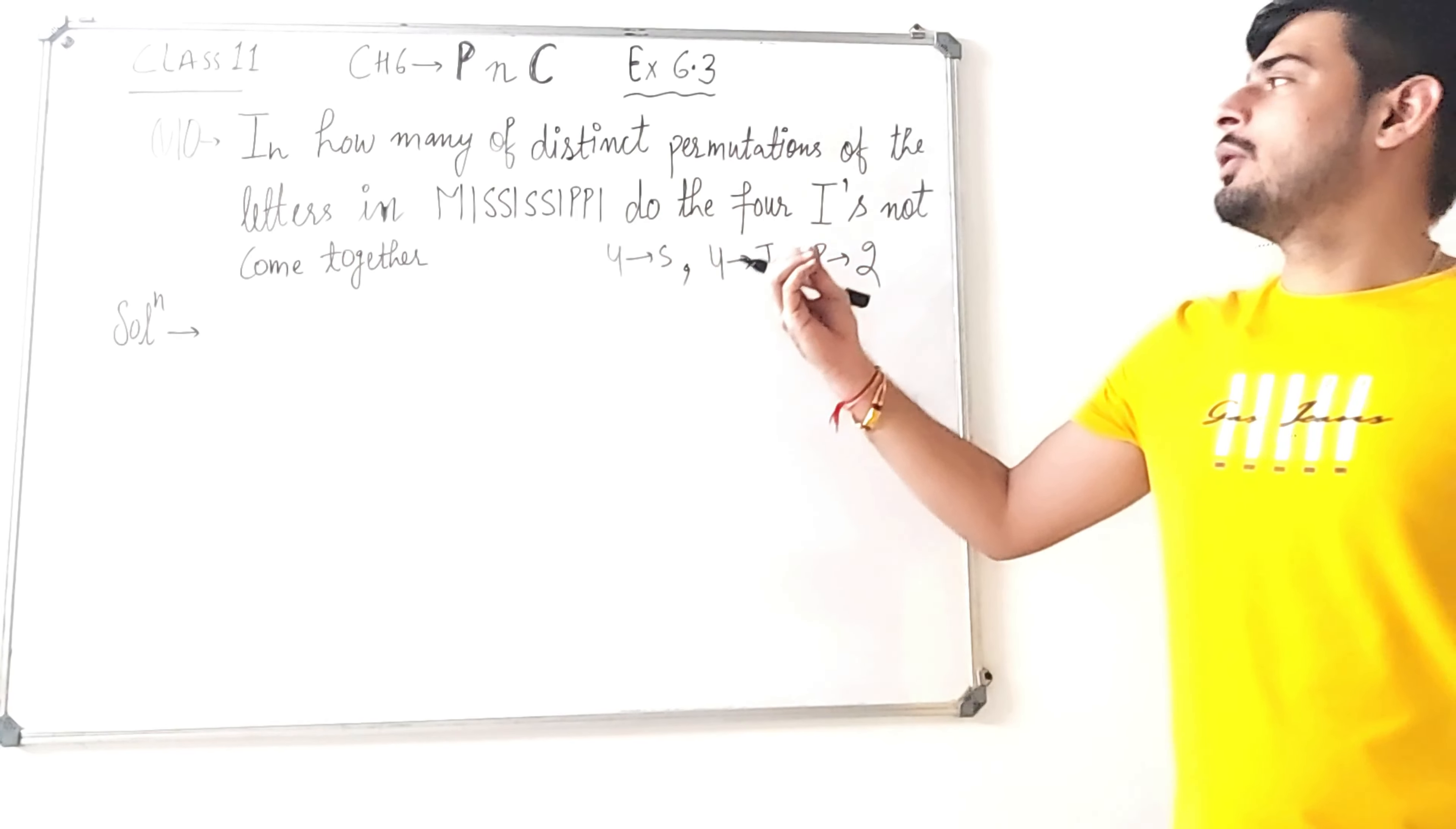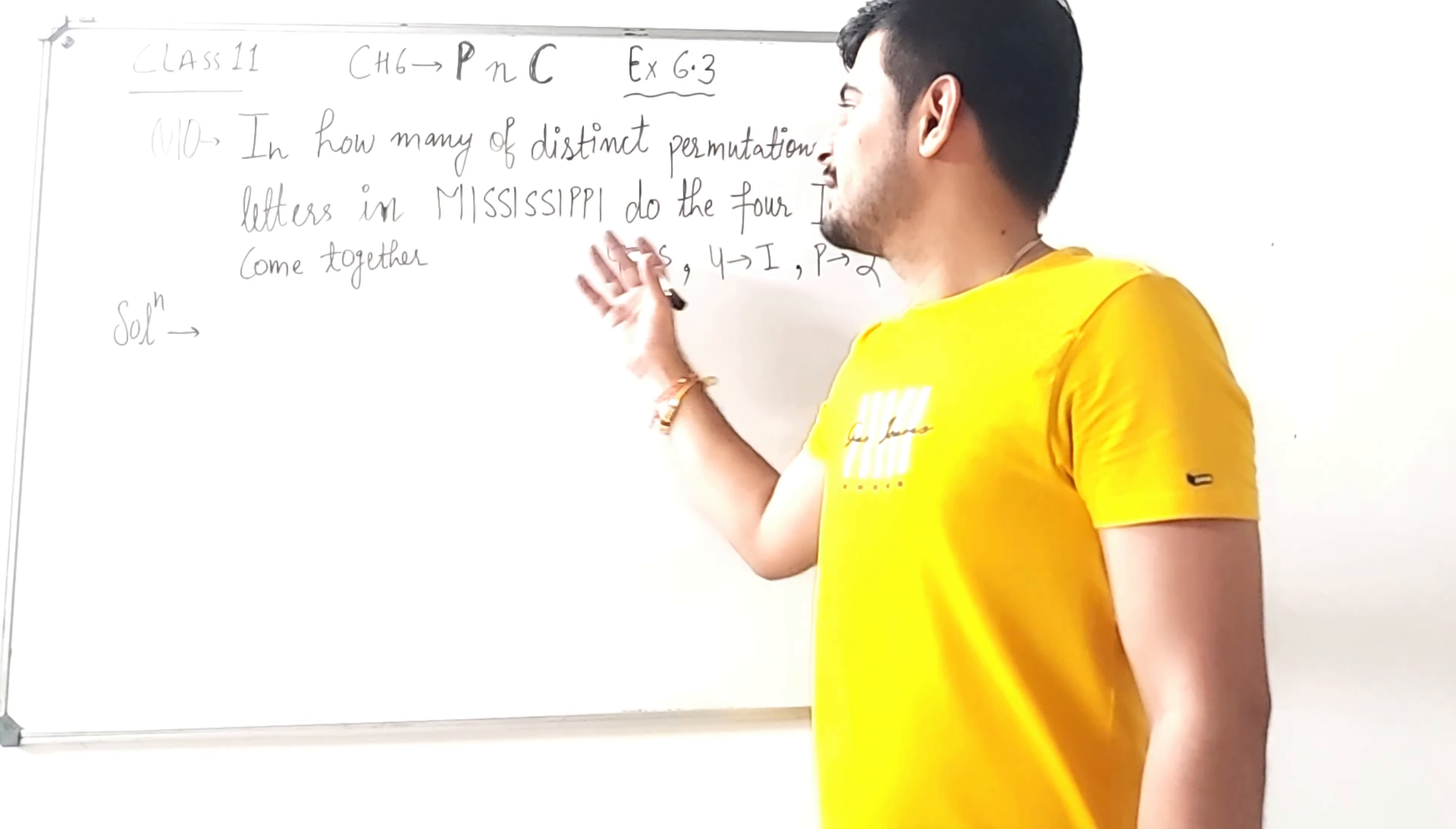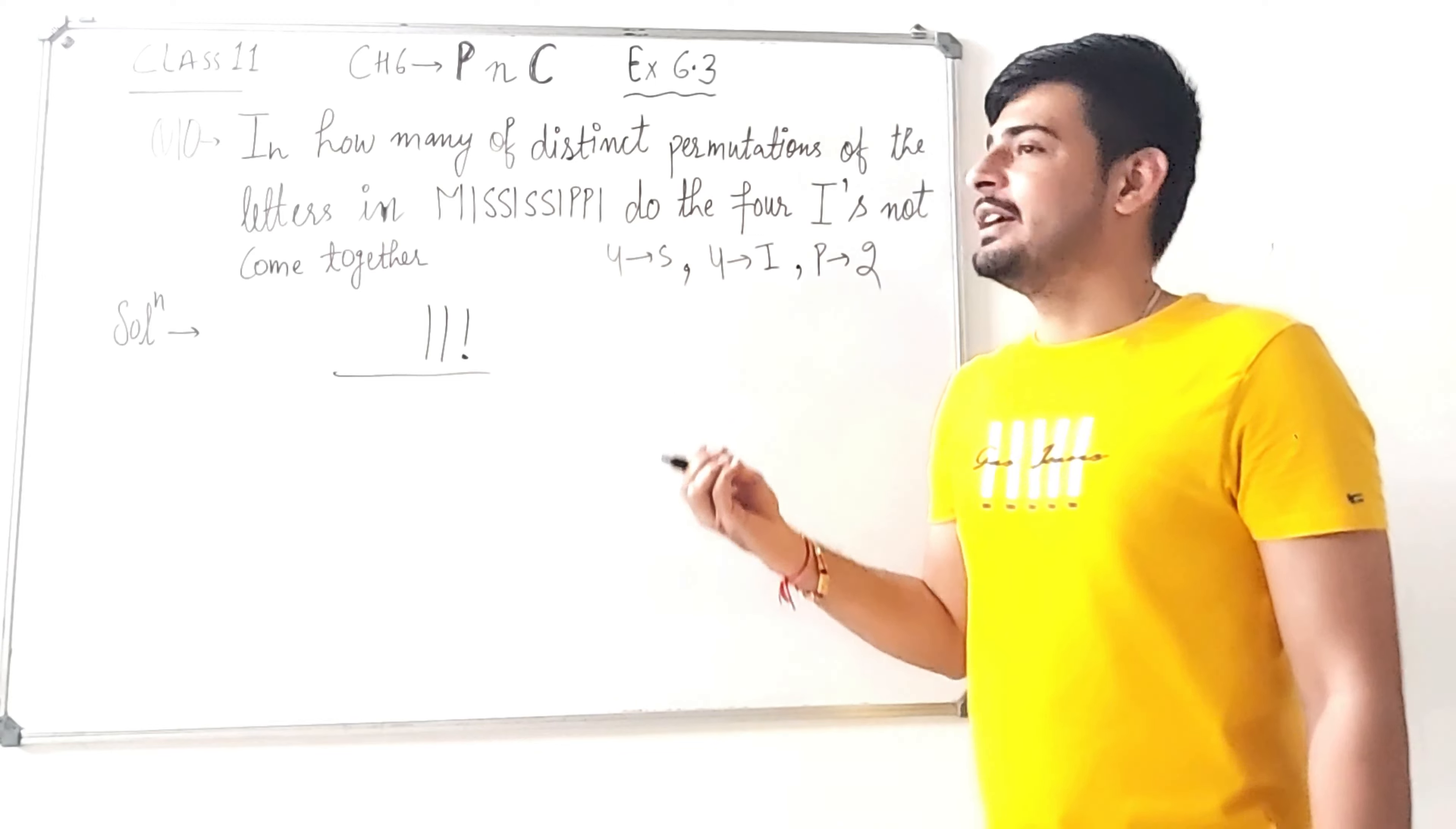Now, total number of permutations of the letters of the word Mississippi can be written by, how can we write this? Total letters how many are? 11. So first of all, we have 11 factorial upon those same kinds of letters.